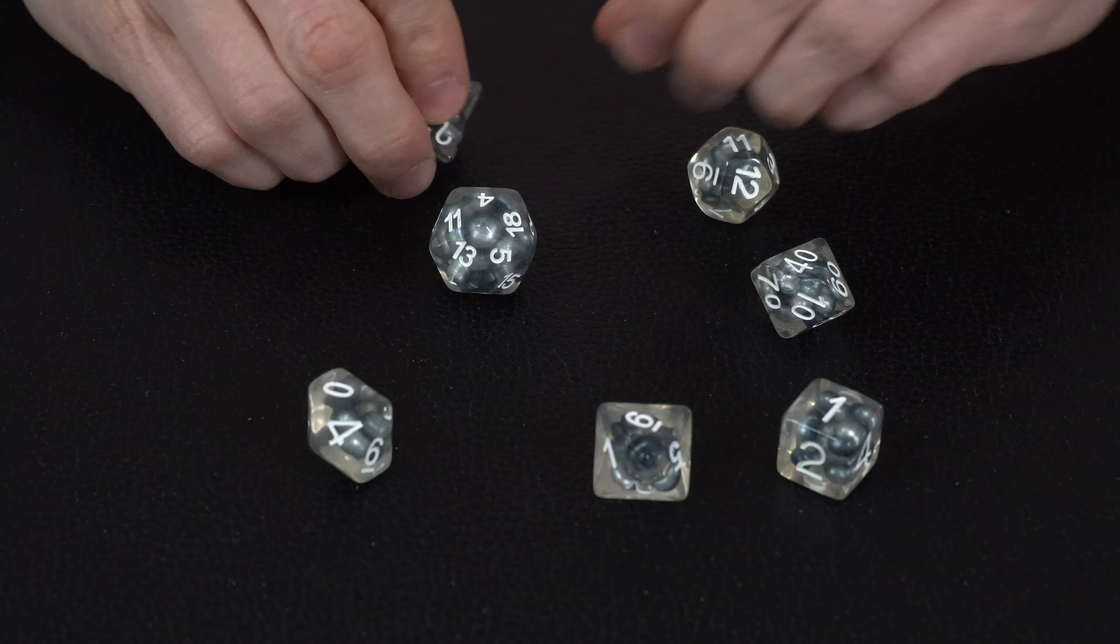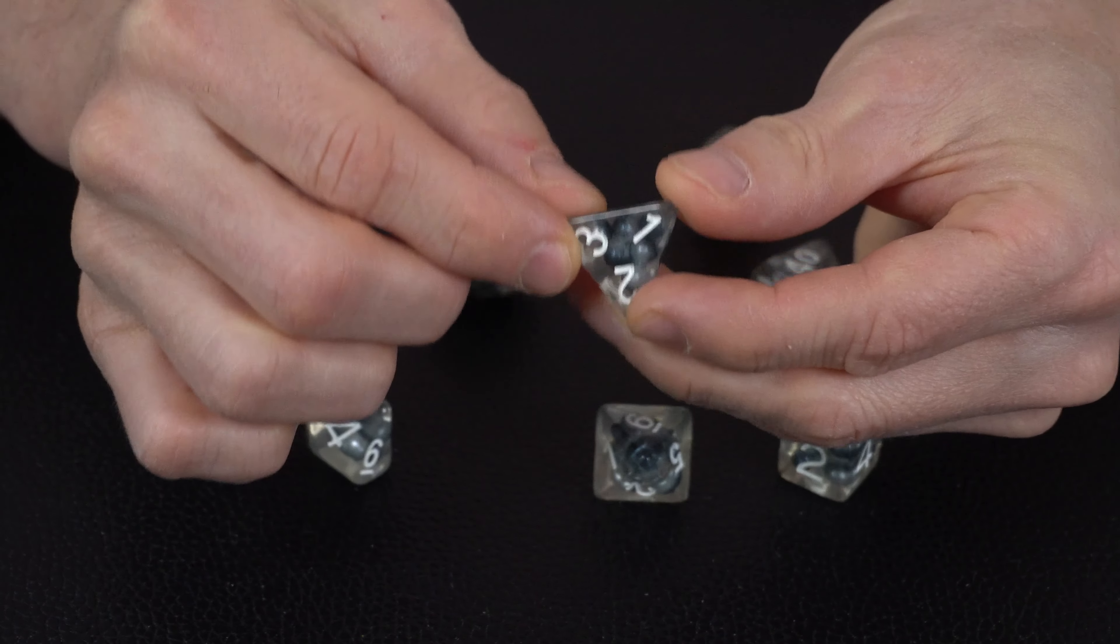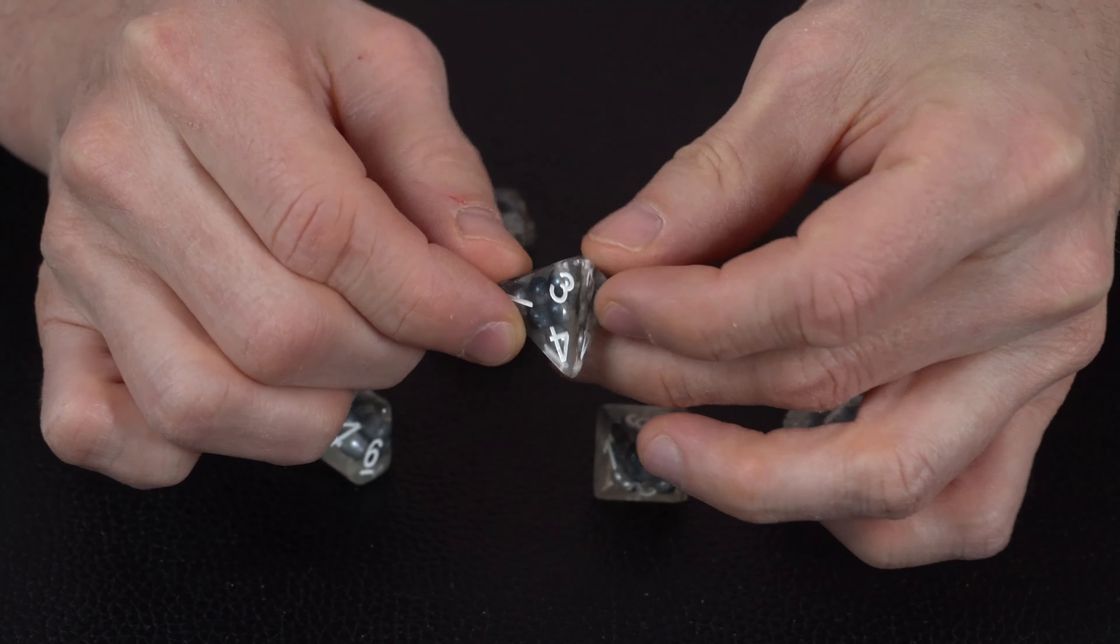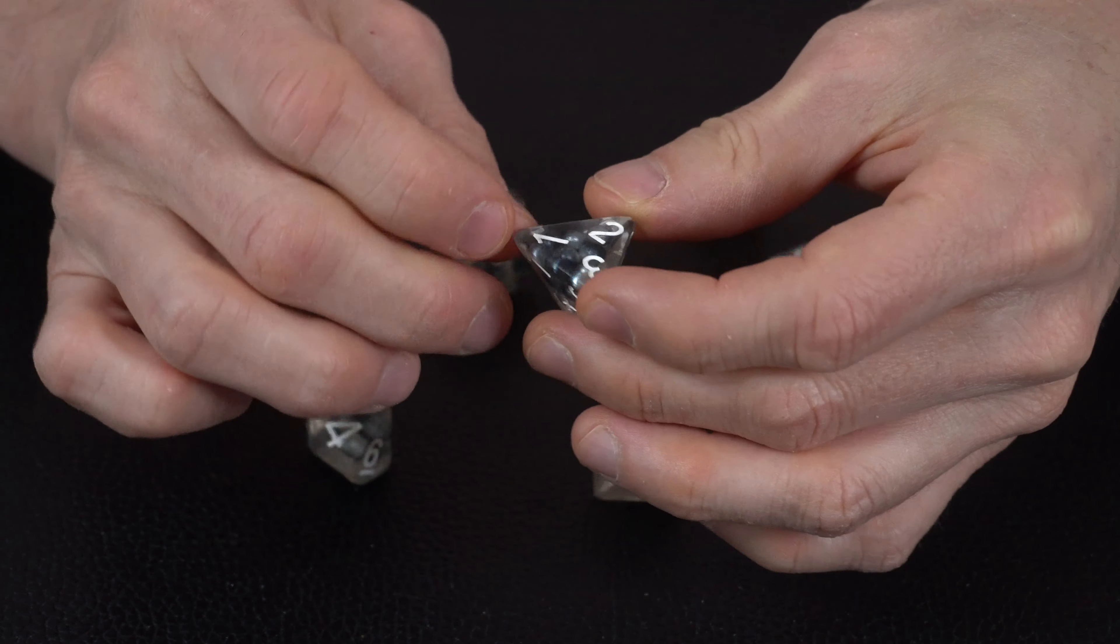And what's also interesting is some of them look like they're more packed than others. So I don't know if they just did a set amount of spheres per item, and then it just looks like it's more because the dice has less surface area than say the dodecahedron.